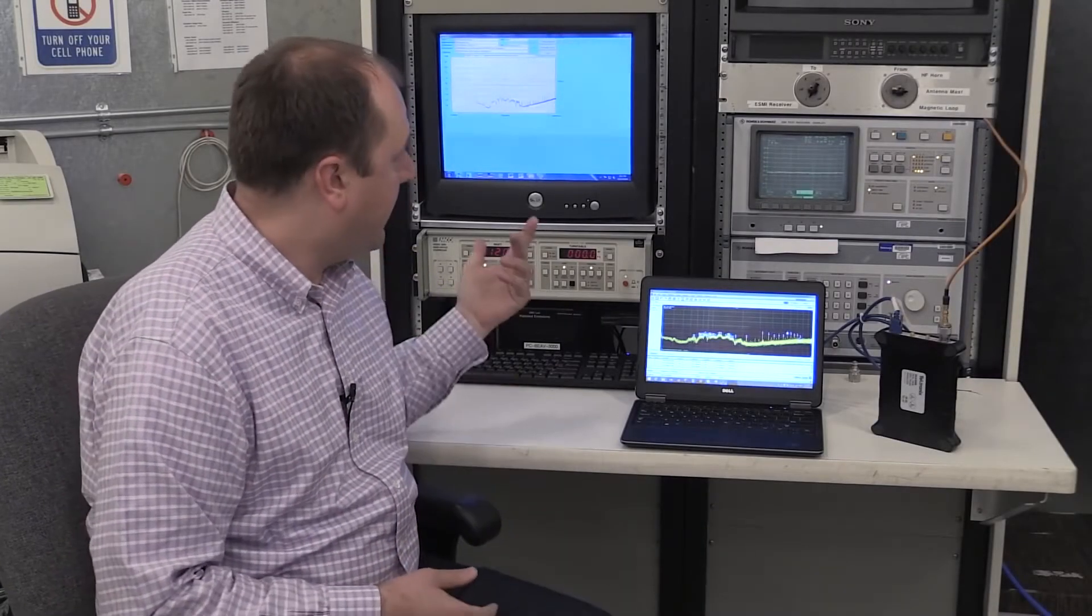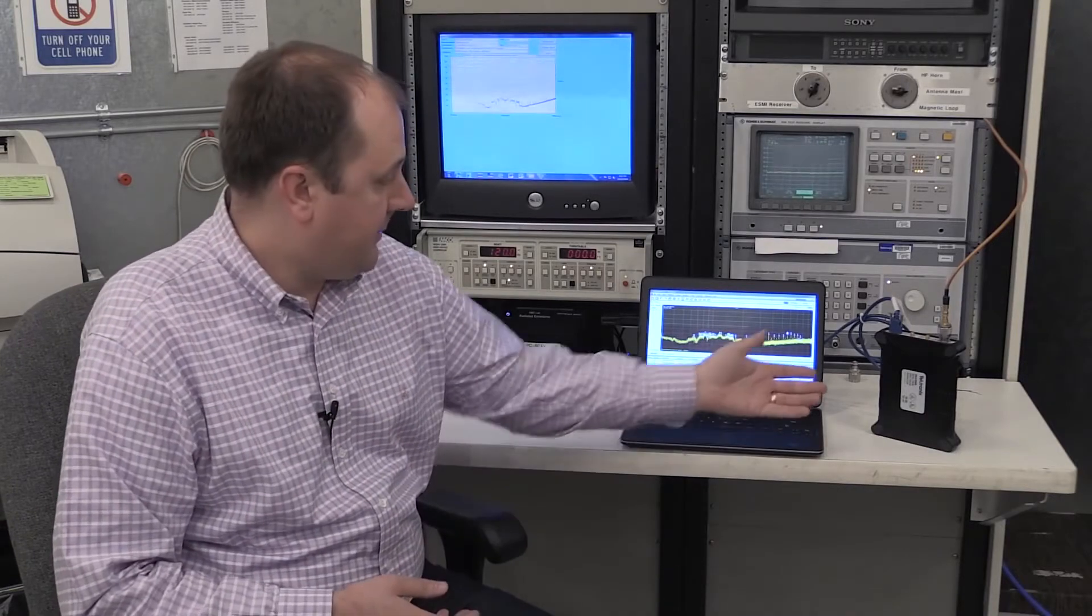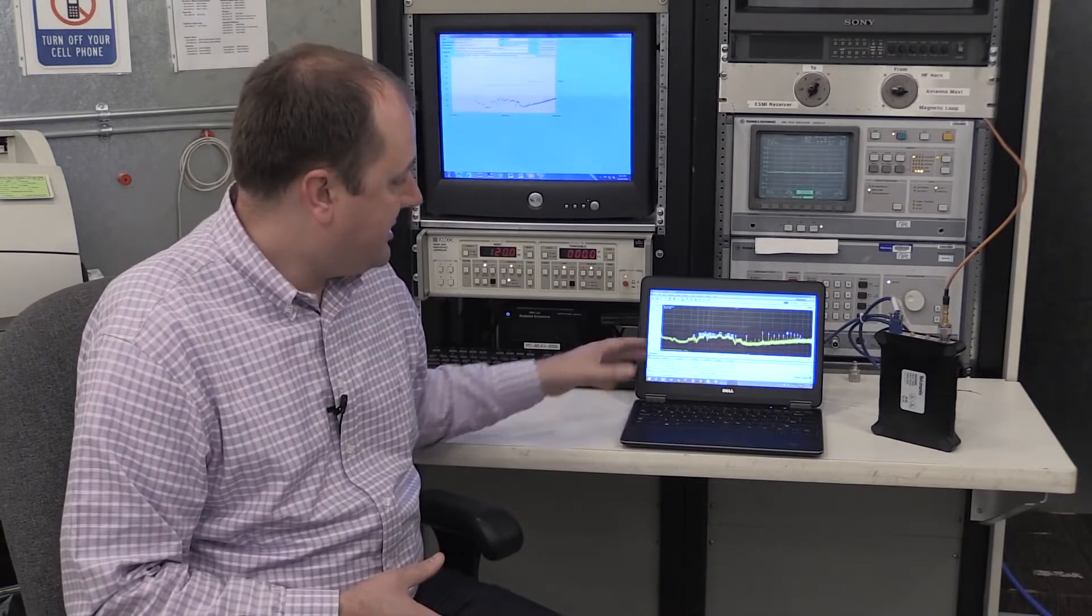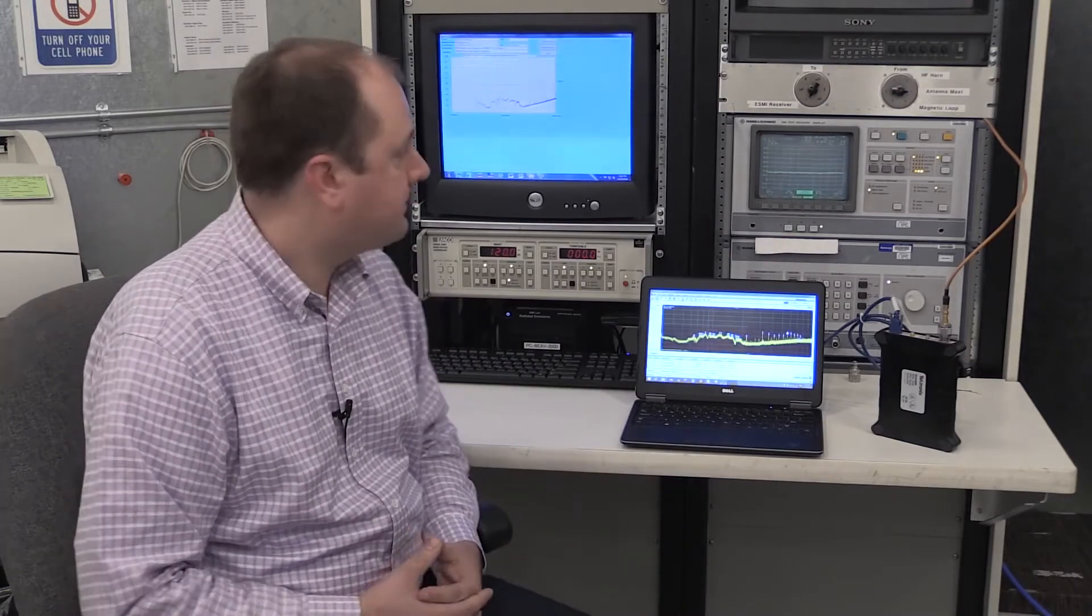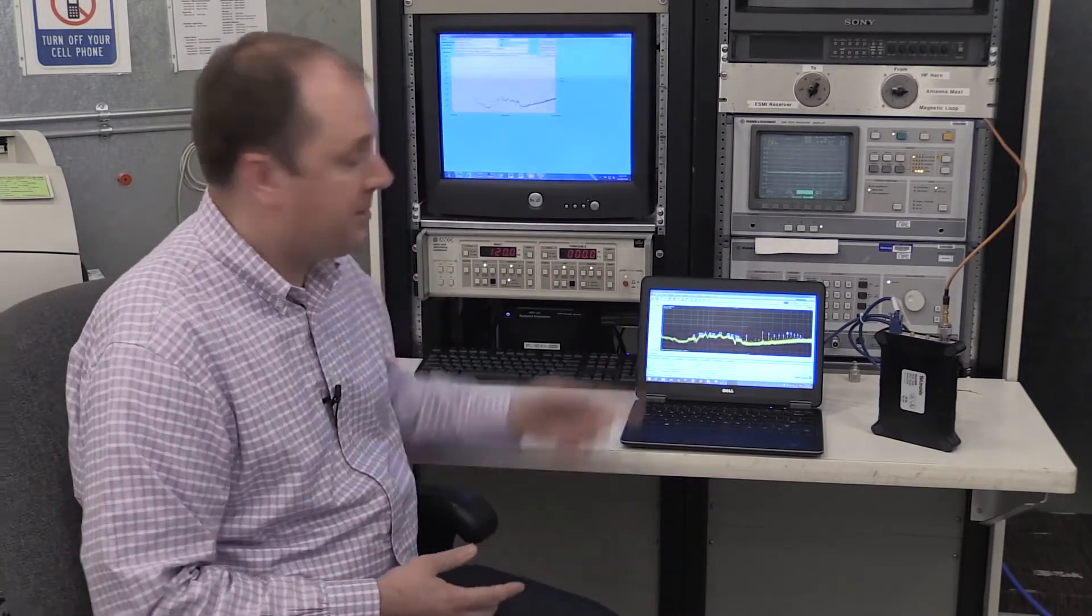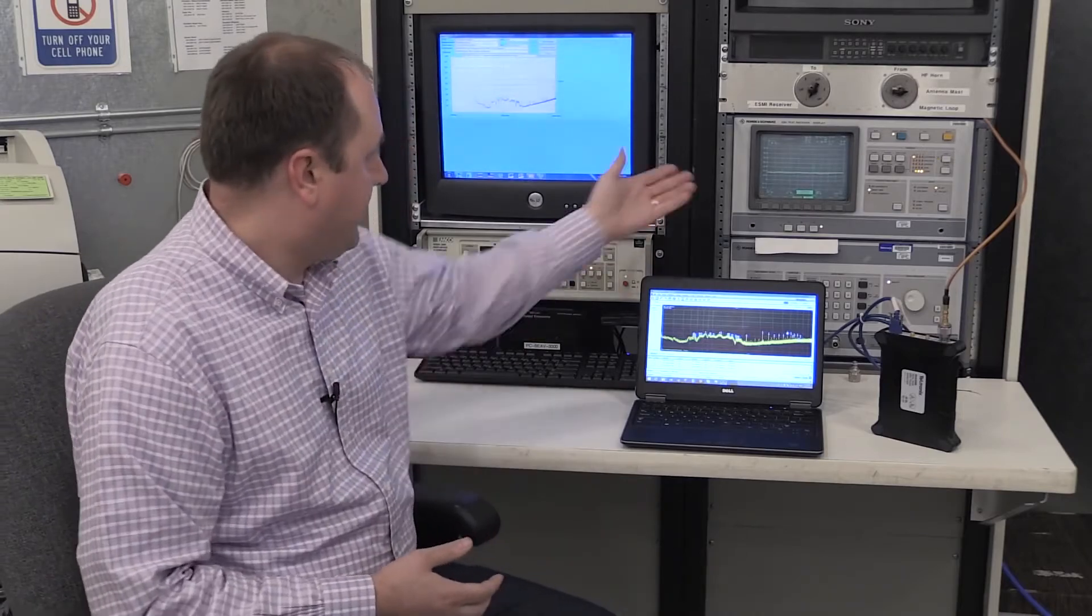Now we're going to compare the results that we get from the full EMI compliance receiver to the results that we see from the RSA 306B USB spectrum analyzer. On the PC we have SignalView PC running, and you see the results of the spur measurements against the same CISPR 11 radiated emissions test. Our device under test is in the chamber here, and you see we have very comparable results. It's interesting that we get similar results with this USB analyzer to those results that we find with the full compliance receiver.